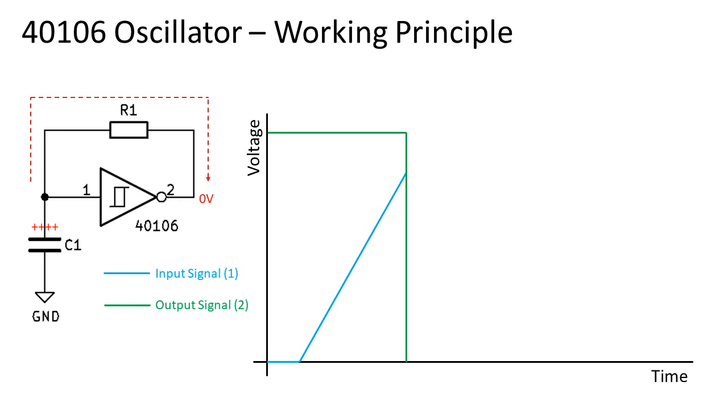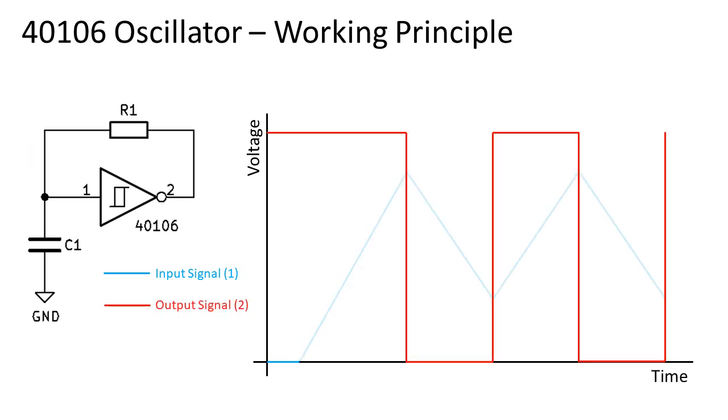At this moment, there is a higher voltage at the input of the Schmitt trigger than at the output. Current will flow from the capacitor and through the resistor into the Schmitt trigger. This will cause the capacitor to discharge again. And when the voltage across the capacitor reaches the lower threshold of the Schmitt trigger, the output switches to a high level again. This process continues forever and will create a series of switching output levels, which in turn creates a waveform called a square wave.